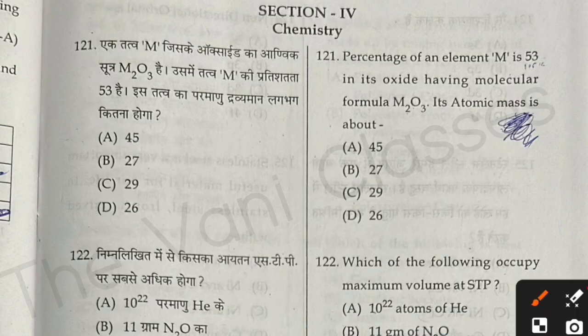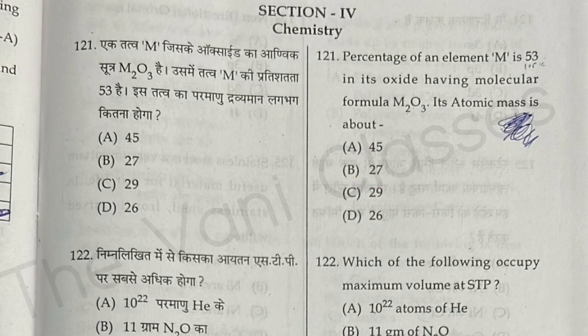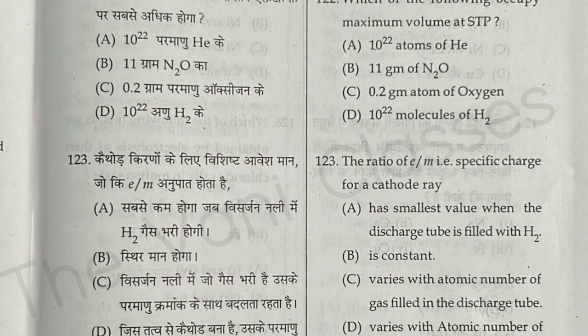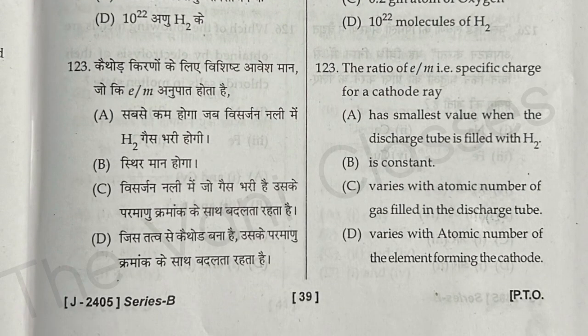Question 121: The percentage of element M is 53 and its oxide has molecular formula M2O3. Its atomic mass is about 27, so option 27 is the right answer. Question 122 asks which of the following occupies maximum volume at STP — if you know the answer, you can comment. Question 123: The ratio of e/m, the specific charge for a cathode ray, is constant. The right answer is option B — constant.